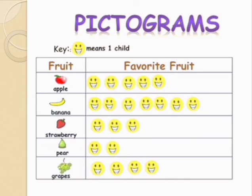Seven children like banana, three children like strawberry, two children like pear, four children like grapes.